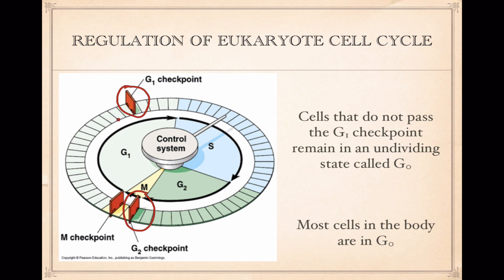If a cell does not pass the G1 checkpoint, it remains in a state called the G-sub-0 state, which means it's a non-dividing cell. Most of the cells in your body are in the G-sub-0 state, which means they've reached their full size, they're fully functional, and they're doing their job, but they're not growing and reproducing.